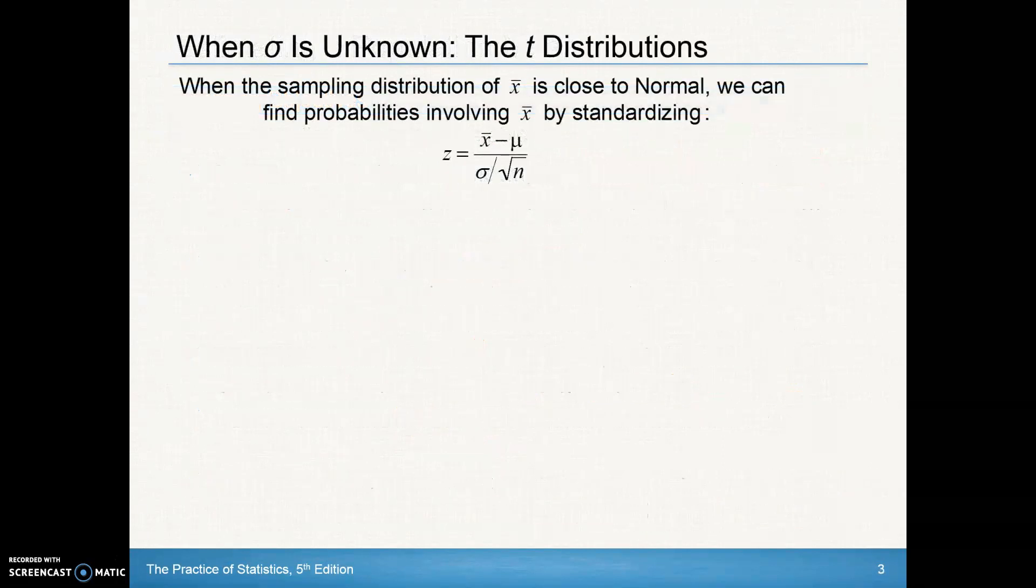The big issue here in section 8.3 is the sigma, the population standard deviation, is unknown. This is actually more likely than actually knowing what the population standard deviation is. So this is where we're going to use t distributions.